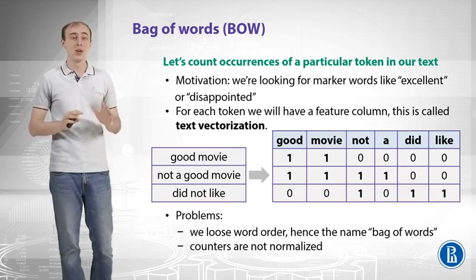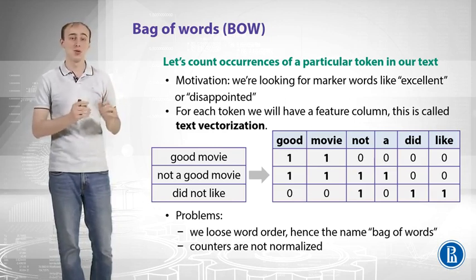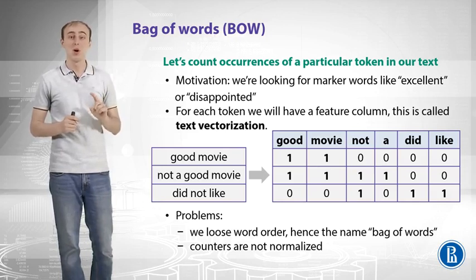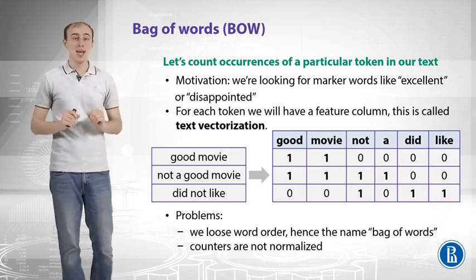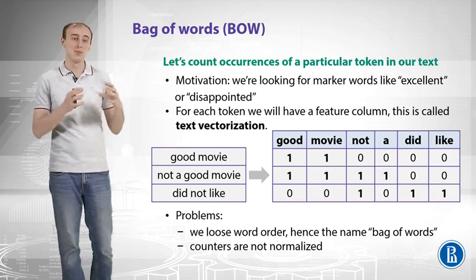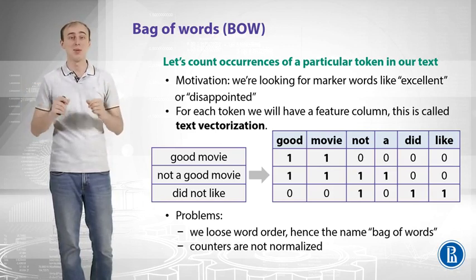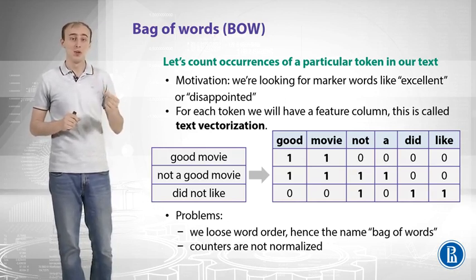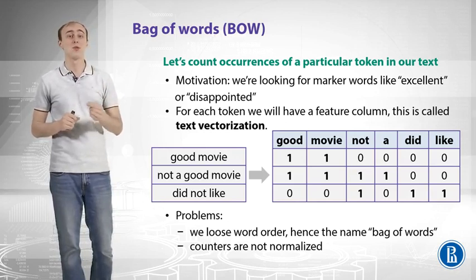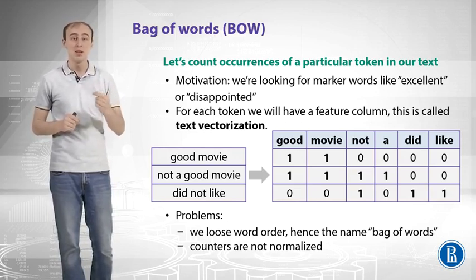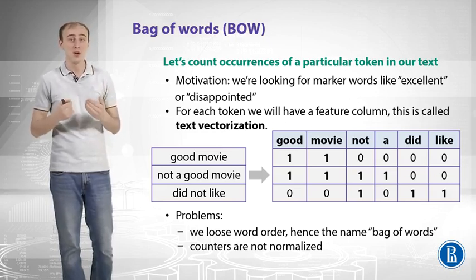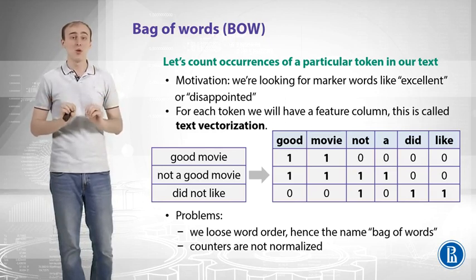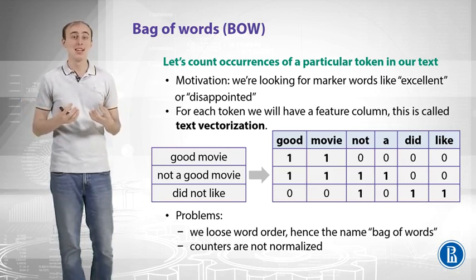Let's take all the possible words or tokens that we have in our documents, and for each such token let's introduce a new feature or column that will correspond to that particular word. So that is a pretty huge matrix of numbers. We translate our text into a row in that matrix. For example, in 'good movie', the word 'good' is present so we put one in the column that corresponds to that word, then one for 'movie', and all the rest are zeros. That is a really long vector which is sparse in the sense that it has a lot of zeros.